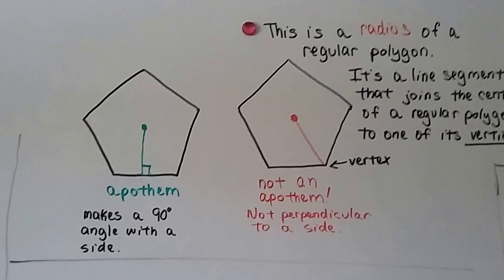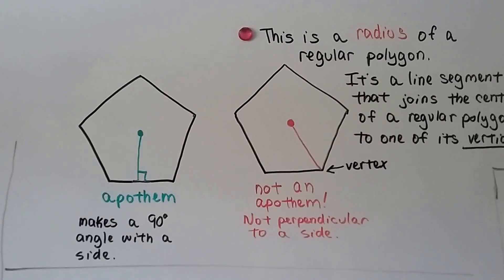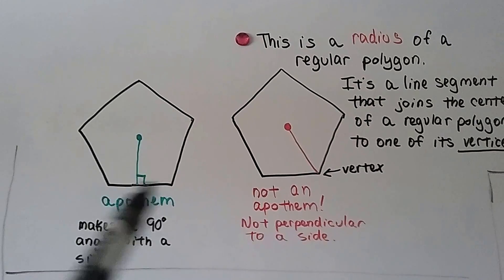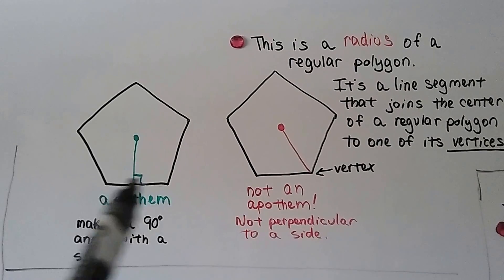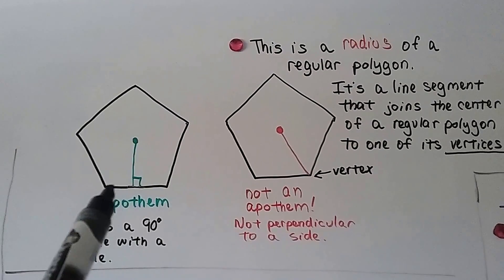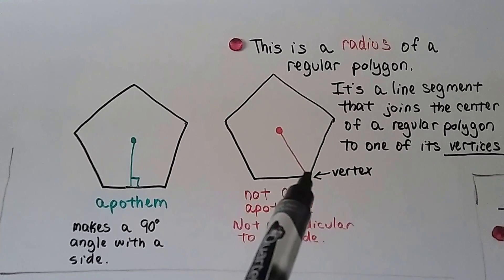So look at the difference here. This is an apothem and that's not. Can you tell the difference? This is going to that 90 degree T-shaped perpendicular side, this one's going to a corner, this one's going to a vertex.